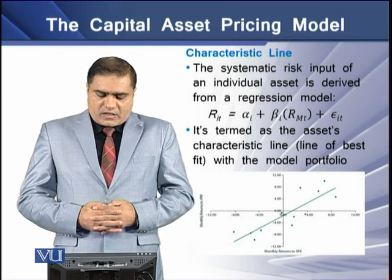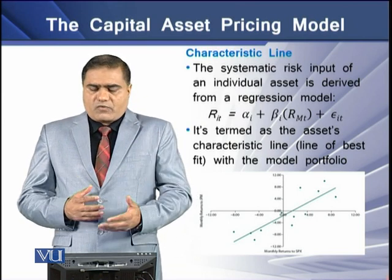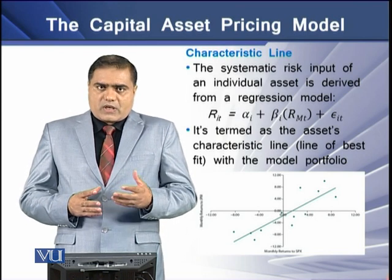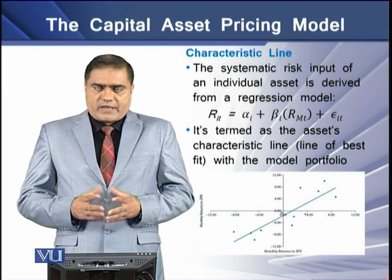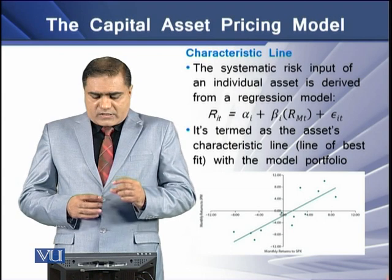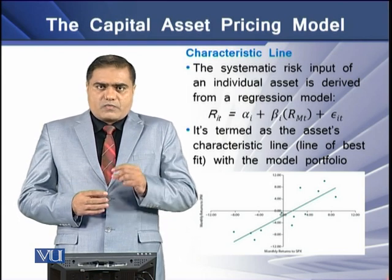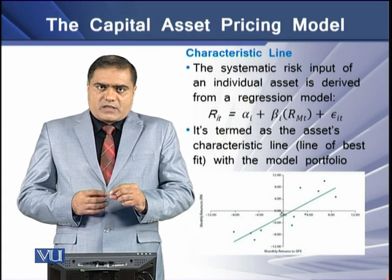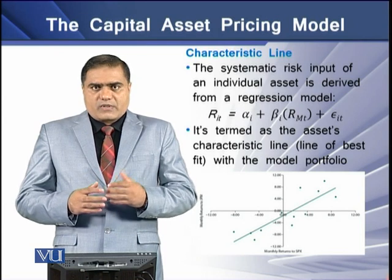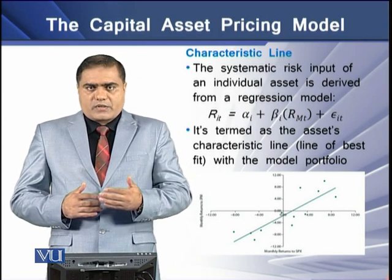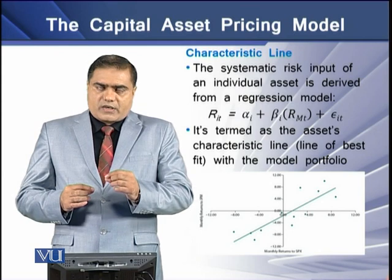The characteristic line is derived from the regression model: RI = alpha + beta × RM + error term. This model is termed the asset's characteristic line, which is a line of best fit that passes through the mean returns of security I and the market portfolio. When this line is drawn, it represents the characteristic line and thus the beta or systematic risk of the security.